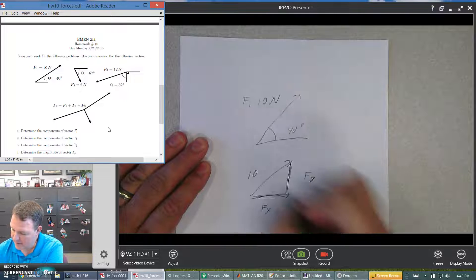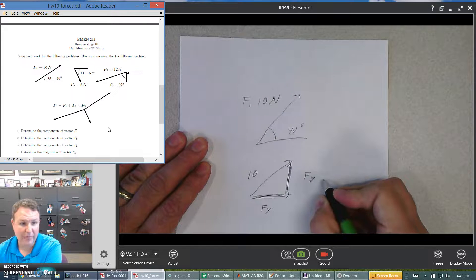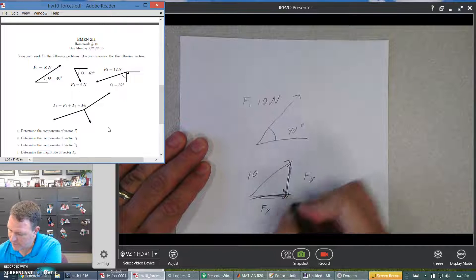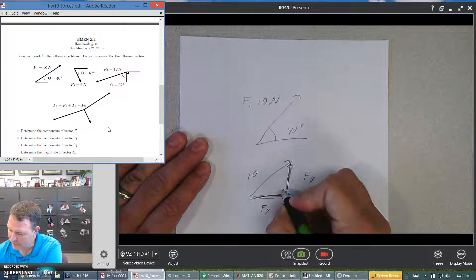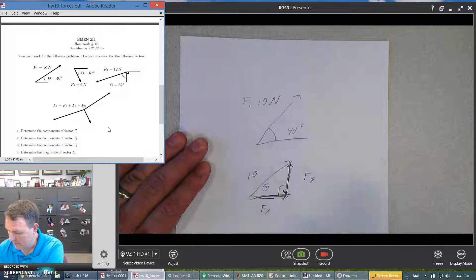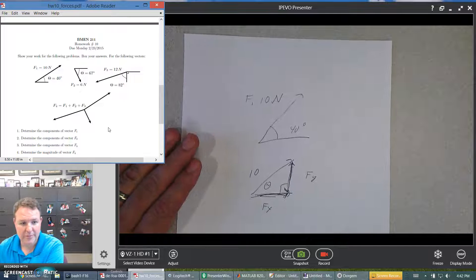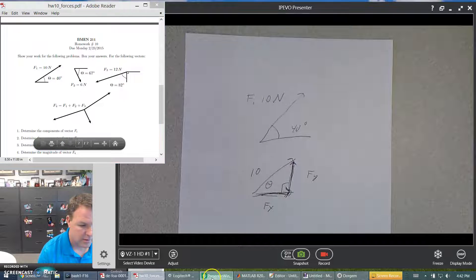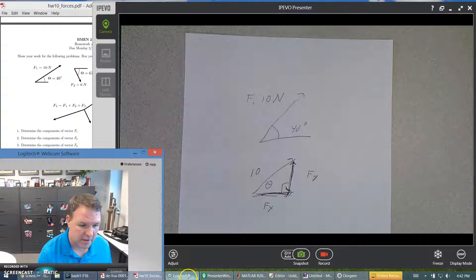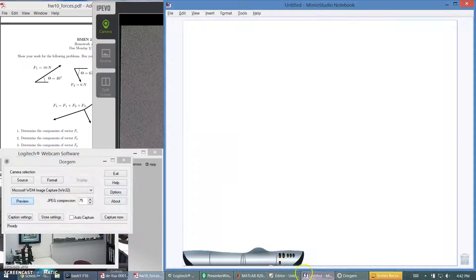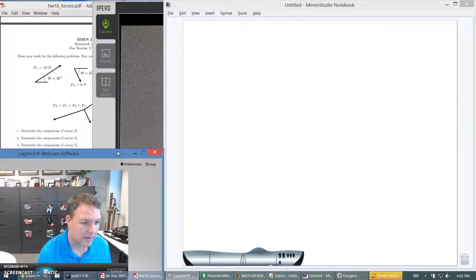So if this is 10, we have to find Fx and Fy for that. Fx is this part, and Fy is this part. You can see it's a right triangle. This is our theta. We can use SOHCAHTOA and figure this one out. What else can we do? We can try the board and see how the board works.